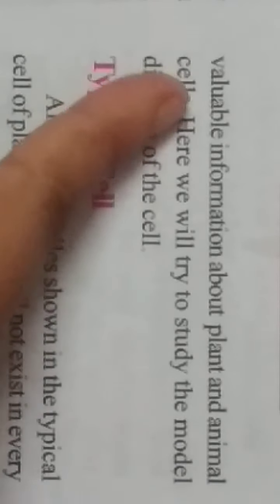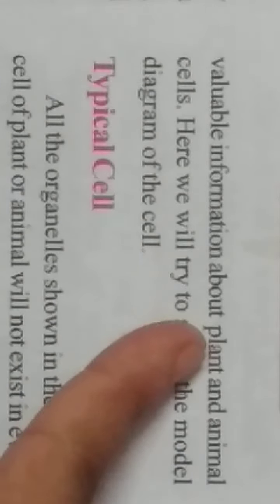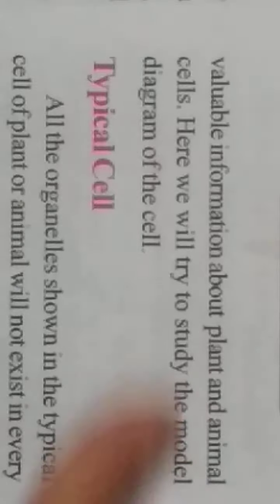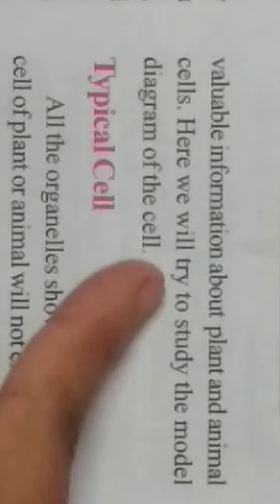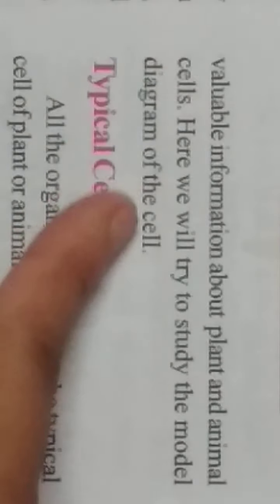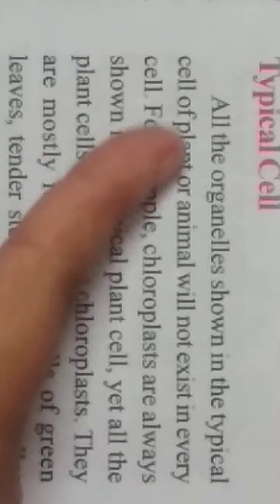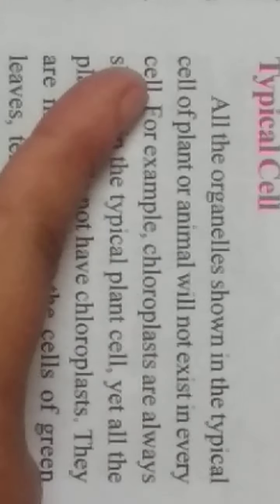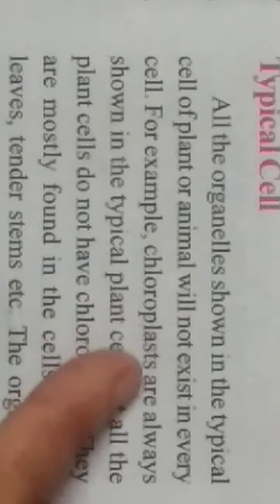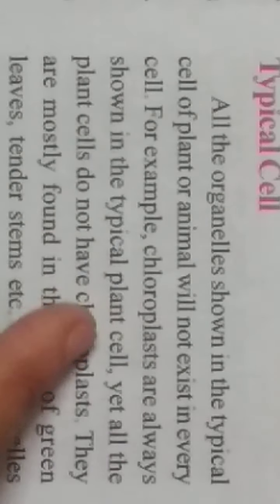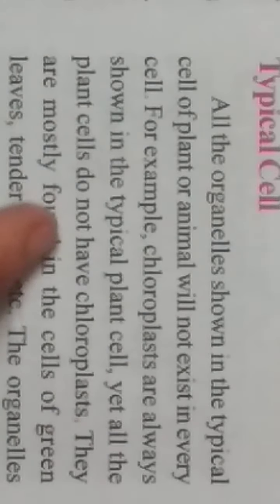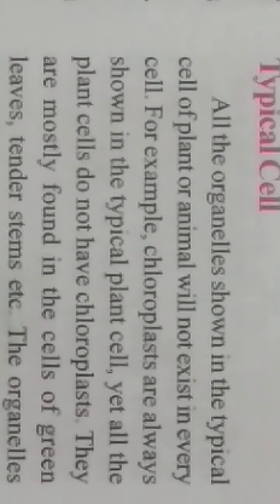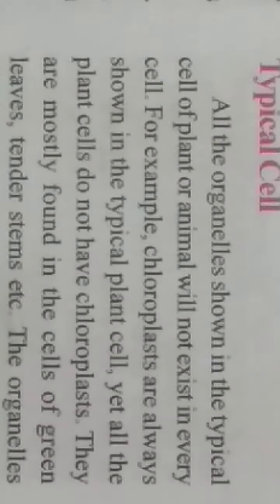These have given valuable information about plant and animal cells. Here we will try to study the model diagram of a typical cell. All the organelles shown in the typical cell of a plant or animal will not exist in every cell. For example, chloroplasts are always shown in a typical plant cell, yet all plants do not have chloroplasts — they are mostly found in cells of green leaves.